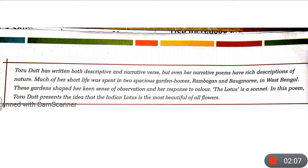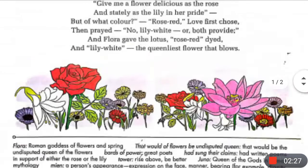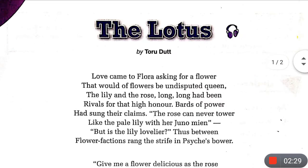In this form, Toru Dutt presents the idea that the Indian lotus is the most beautiful of all flowers. The lotus, known as 'kamal' in Hindi, is shown to be more beautiful than all other flowers, and the poem explains how.